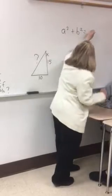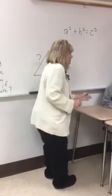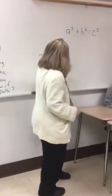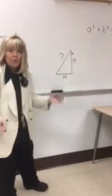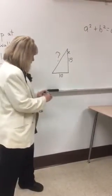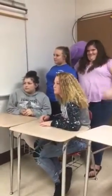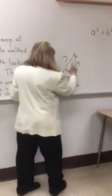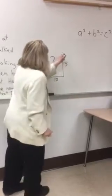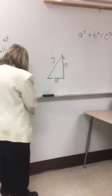Next you have to identify the two legs of the right triangle. The legs form what letter? L. Here's my L — I'm going to outline my L. Those are my two legs.